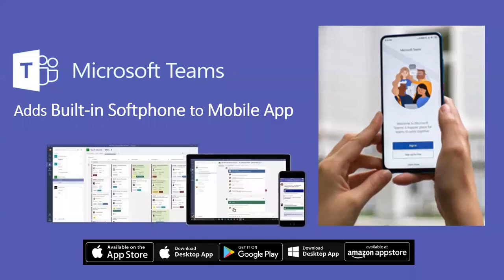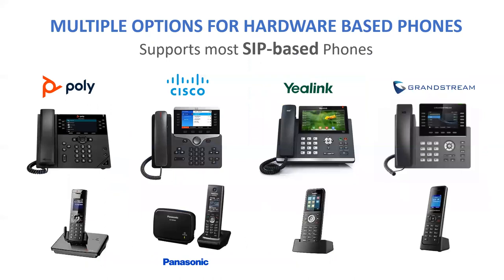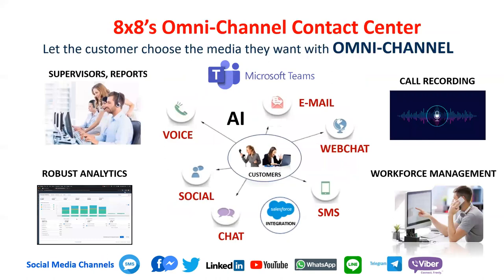On mobile phones, they've added a soft phone to the mobile app so you can make and receive calls. Caller ID comes up on your office number, so you can separate your business and personal calls on the same device. There are multiple options for hardware — in some cases you can reuse existing phones, but they almost always provision you new ones: Poly, Cisco, Yealink, Grandstream — these all work with the solution.